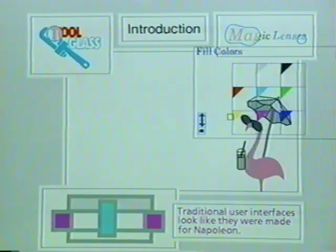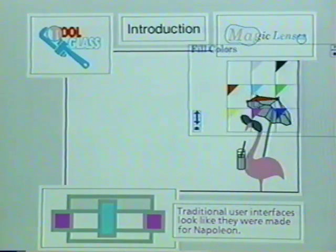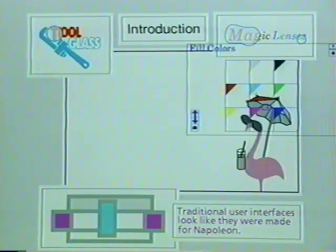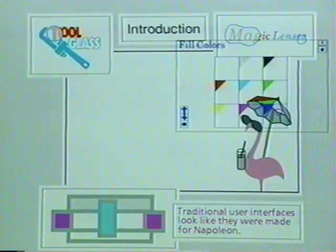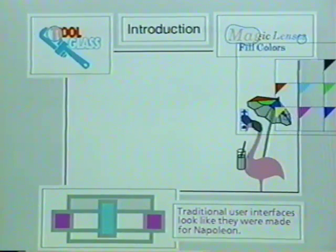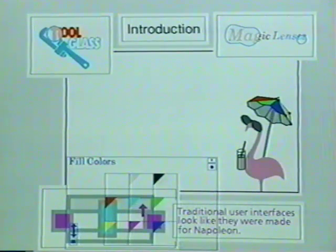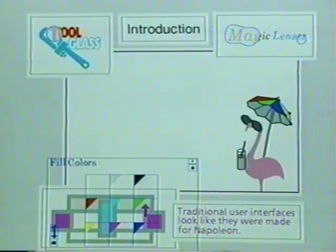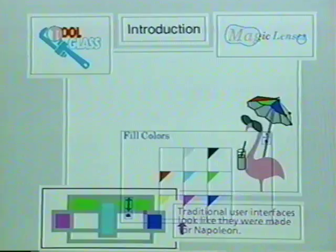For example, this color palette is a set of buttons called click-through buttons. Clicking through one of these buttons changes the fill color of the object beneath. These buttons work over several applications including a graphics editor, a rectangle editor, and a text editor.